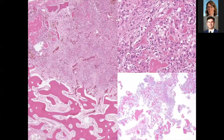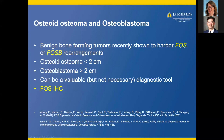Here is a bone tumor showing a neoplastic proliferation that is not infiltrating the surrounding host bone. High power shows a very vascular stroma with osteoblastic rimming of cells. Another low power view shows a nidus of richly vascular stroma with haphazard deposition of osteoid. This is osteoid osteoma and osteoblastoma — benign bone-forming tumors recently found to harbor FOS or FOSB rearrangements, similar to epithelioid hemangioma and pseudomyogenic hemangioendothelioma. Osteoid osteoma is less than two centimeters; osteoblastoma is greater than two centimeters. Knowing this is not necessary for diagnosis but can be valuable for the general surgical pathologist.